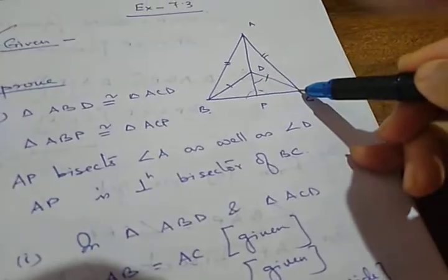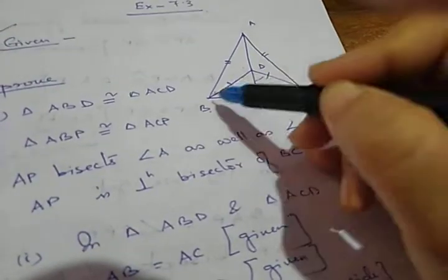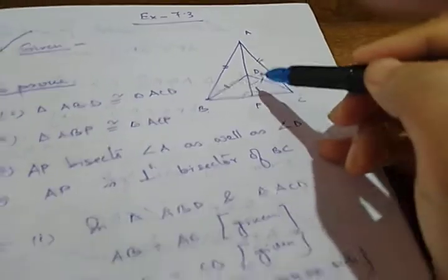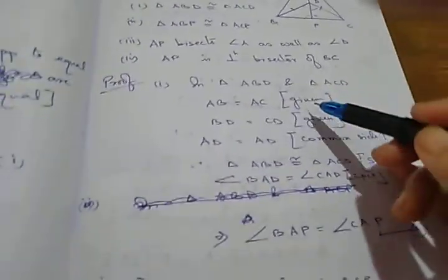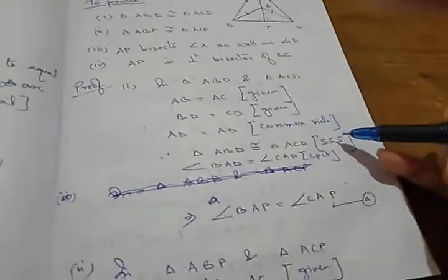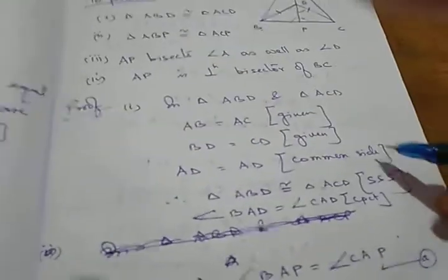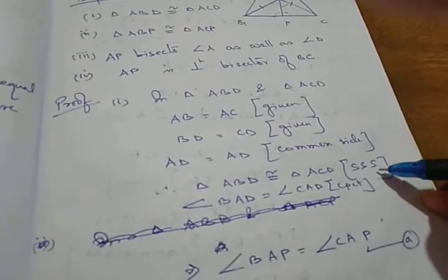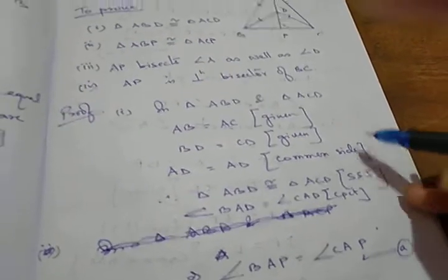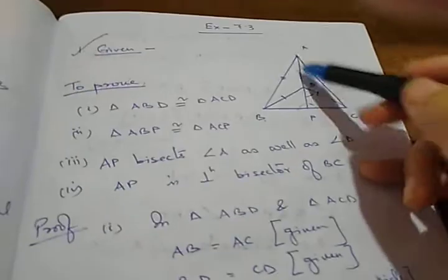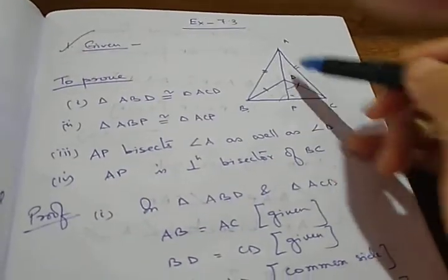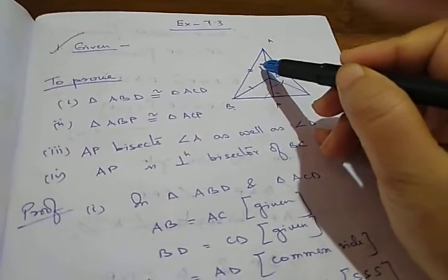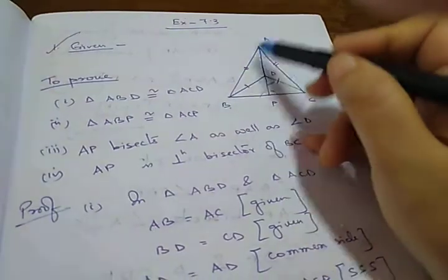This side equals to this side — AB equals to AC, BD equals to CD, and AD is the common side. Therefore these two triangles are congruent with the help of side-side-side. So after proving these two triangles are congruent, we have proved that this angle equals to this angle, with the help of CPCT.